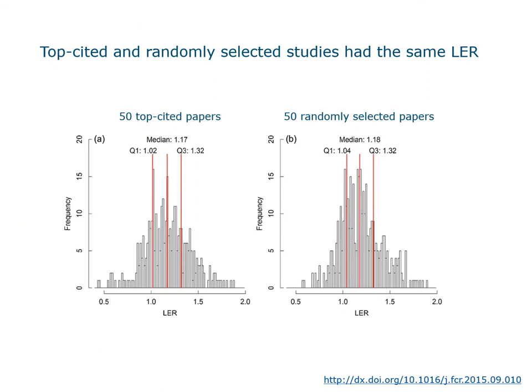The result of the land equivalent ratio in the two samples was very surprising — the results were virtually identical. The median was 1.17 for the top-cited sample and 1.18 for the random sample, and the interquartile range from the first quartile (1.04) to the third quartile (1.32) was virtually the same in both samples. We concluded that both samples are representative of the whole intercropping literature, which was later confirmed in other studies.